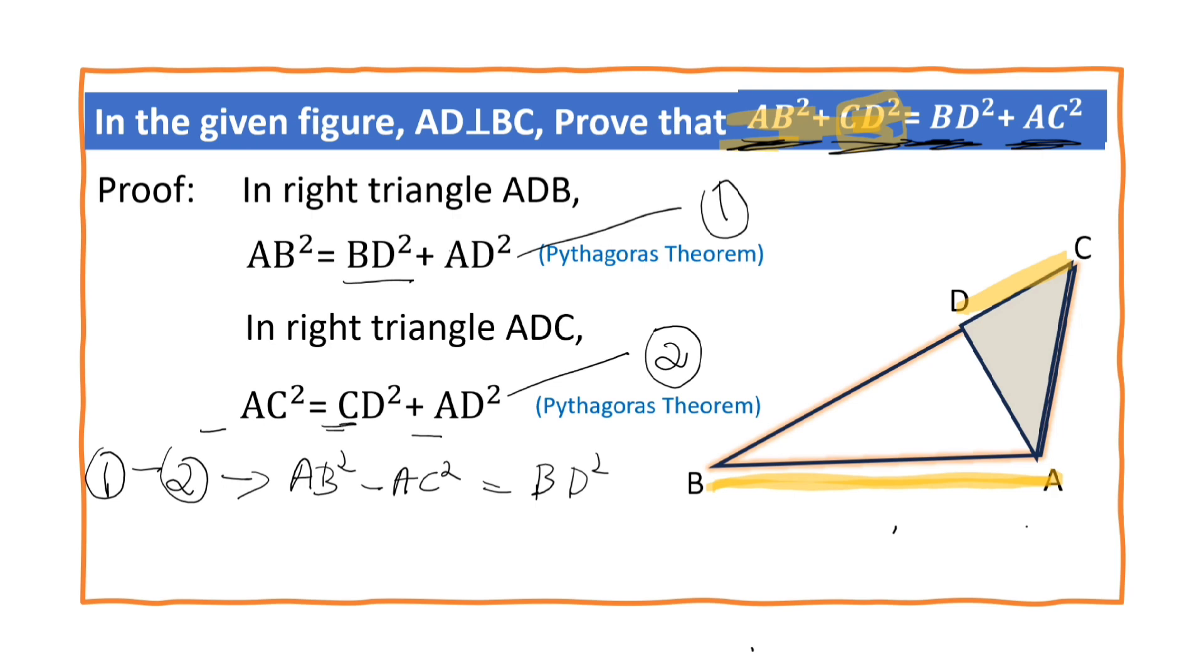Here AD² and AD² get cancelled. One has positive sign, another has negative sign. Minus CD². Here CD has positive sign, isn't it?